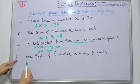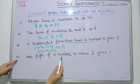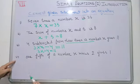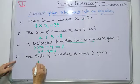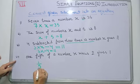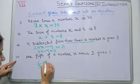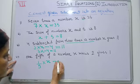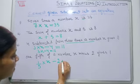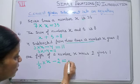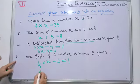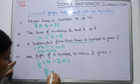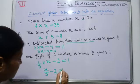Next example: one fifth of a number x minus 2 gives 1. One fifth means 1 upon 5 of a number, meaning multiply by x, minus 2, gives means equal to 1. So, we can write this as x upon 5 minus 2 equals 1.